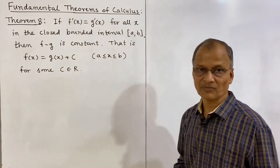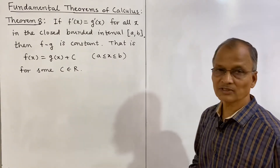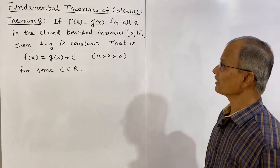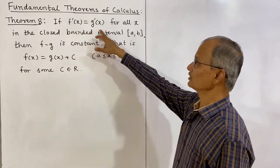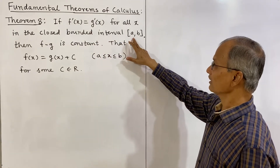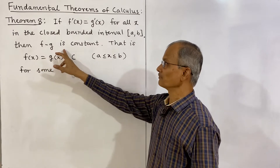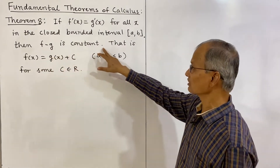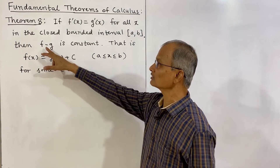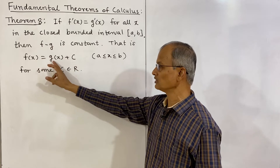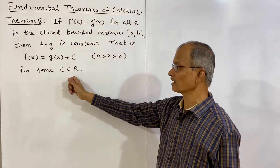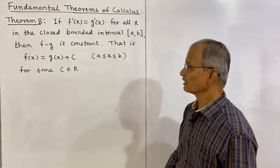Before that, we require Theorem 8, which we will use to prove the second fundamental theorem of calculus. Theorem 8 states: if the derivative of f equals the derivative of g — that is, f'(x) = g'(x) for all x in the closed bounded interval [a, b] — then f(x) minus g(x) is constant. That is, f(x) = g(x) + c, where c is a real number.